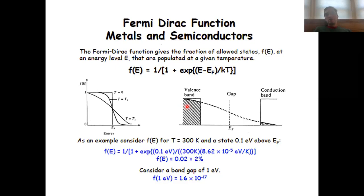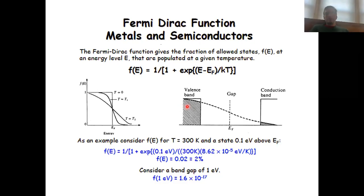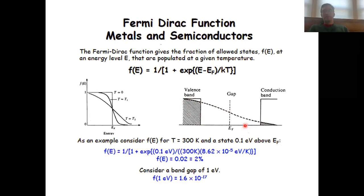In the case of a semiconductor or an insulator, you have a similar situation with the difference that now you have a band gap. This is your Fermi-Dirac function, but now not all states are allowed anymore because of the band gap.